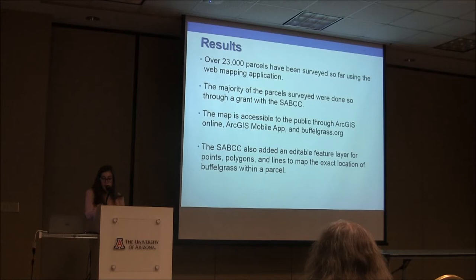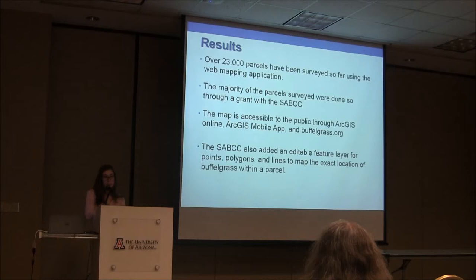The results of the web mapping application are that so far over 23,000 parcels have been surveyed. The majority were surveyed through a grant with the SABCC. The map is accessible to the public through ArcGIS Online, the ArcGIS Mobile App, and buffelgrass.org. The SABCC also added an editable feature layer for points, polygons, and lines, allowing you to map the exact location of buffelgrass within a parcel.